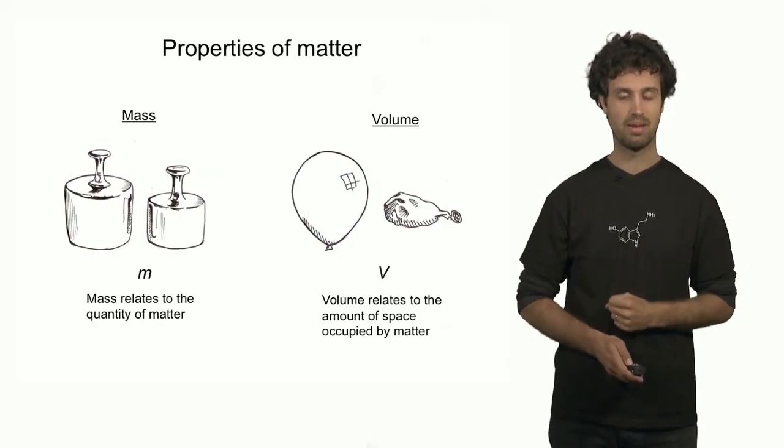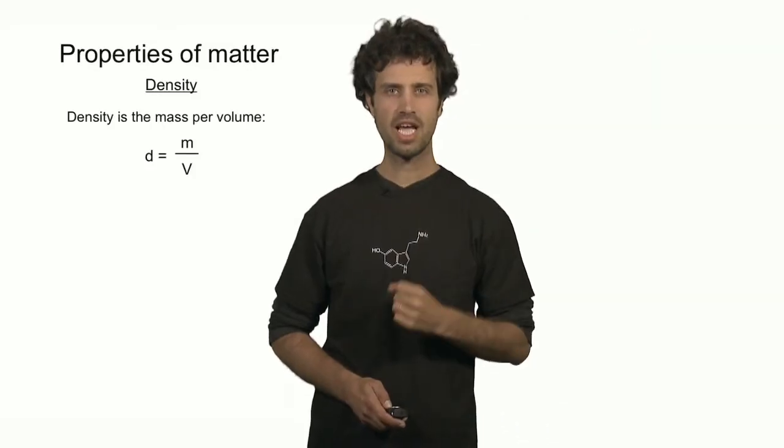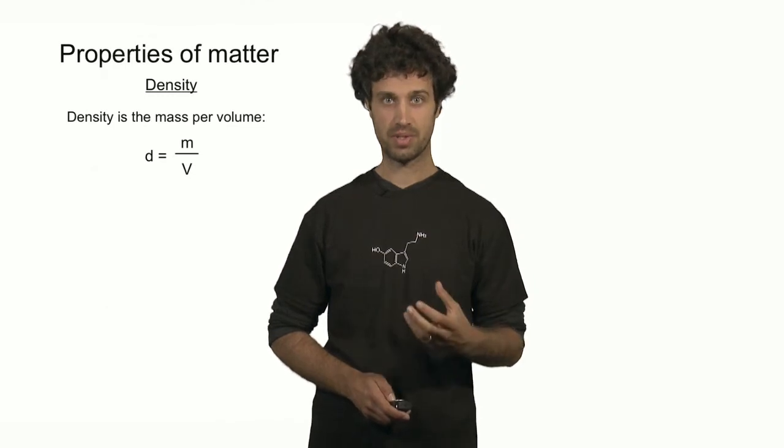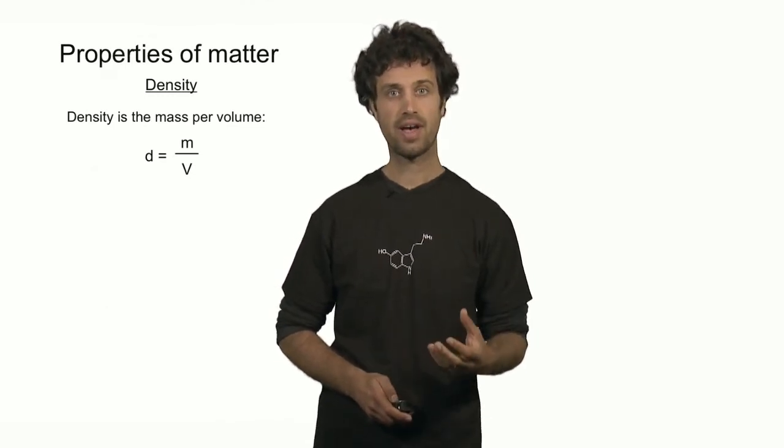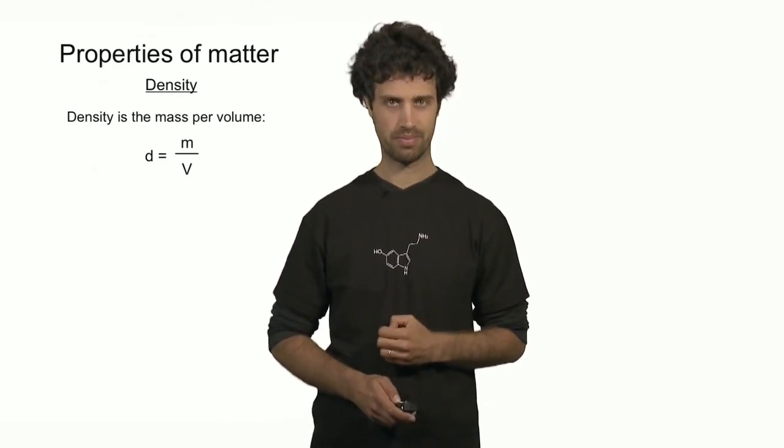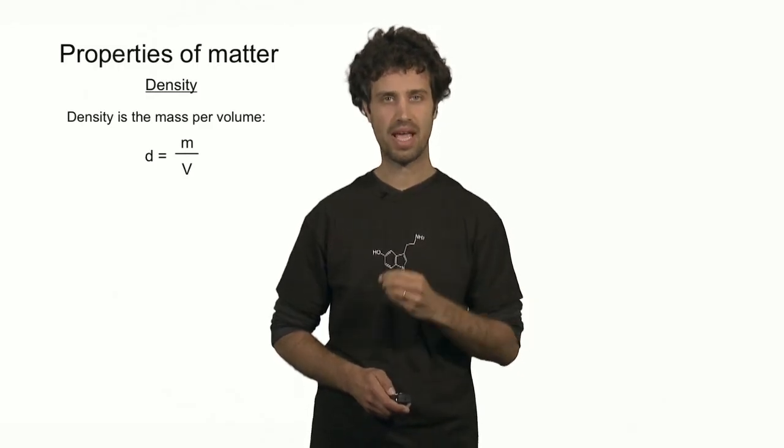the amount of space occupied by the material. The last property we will consider is the property density. It is defined as mass per volume, or d equals m over v.